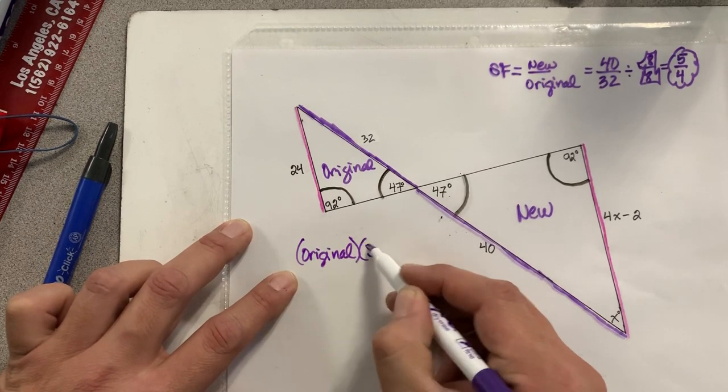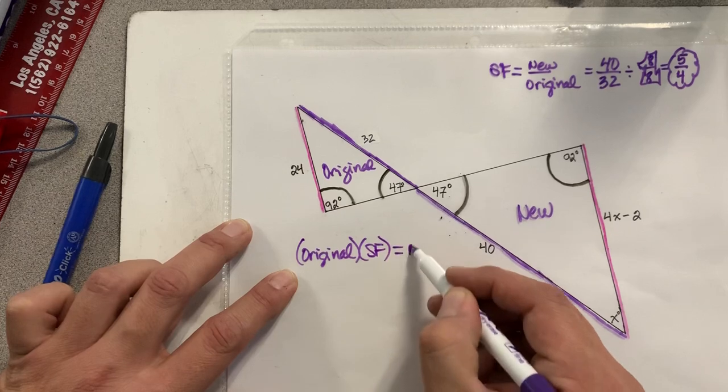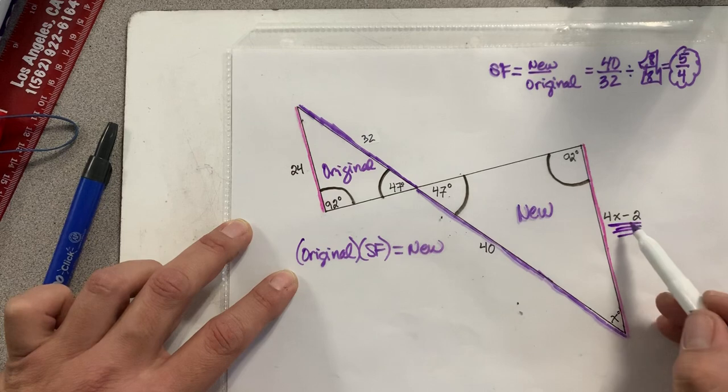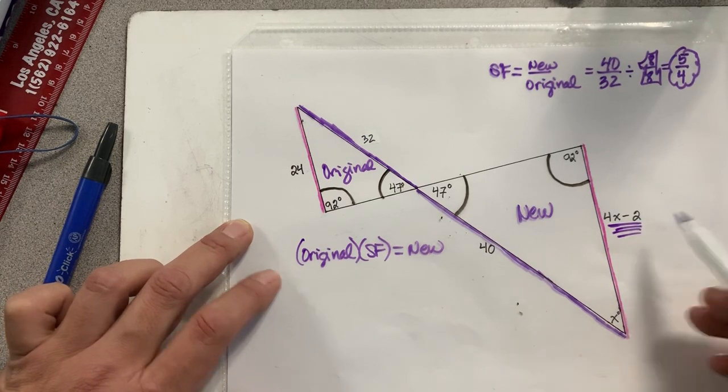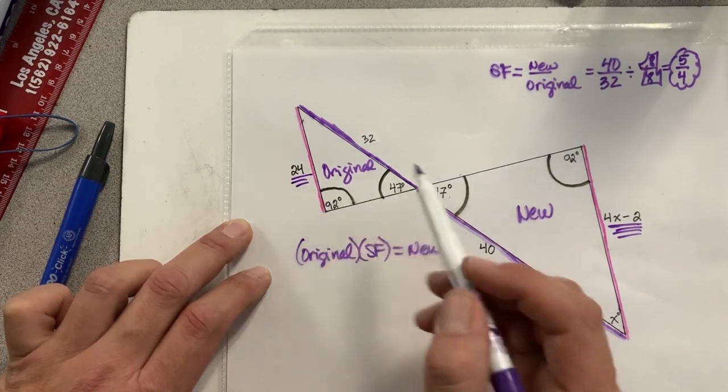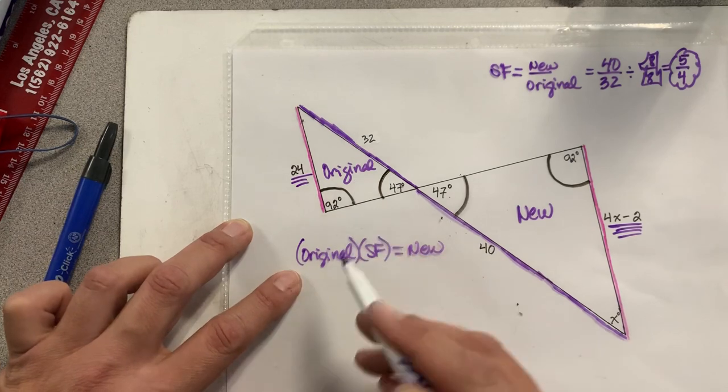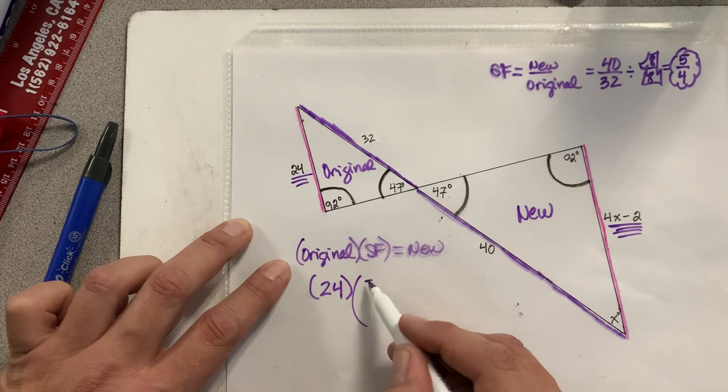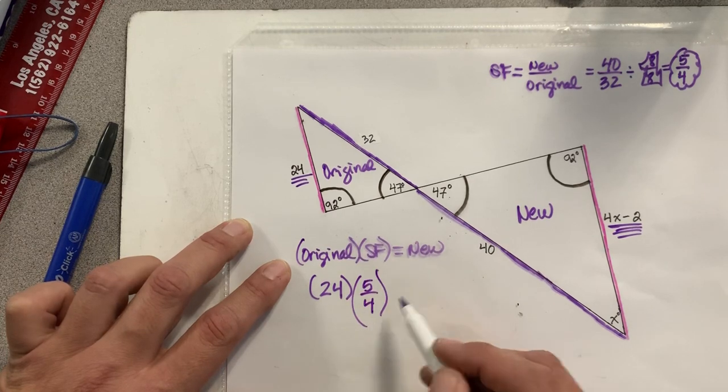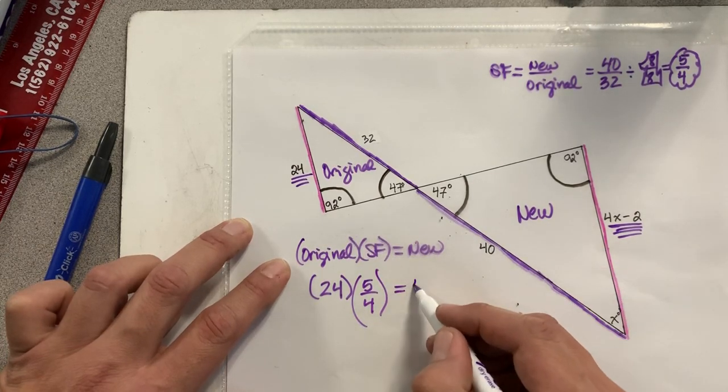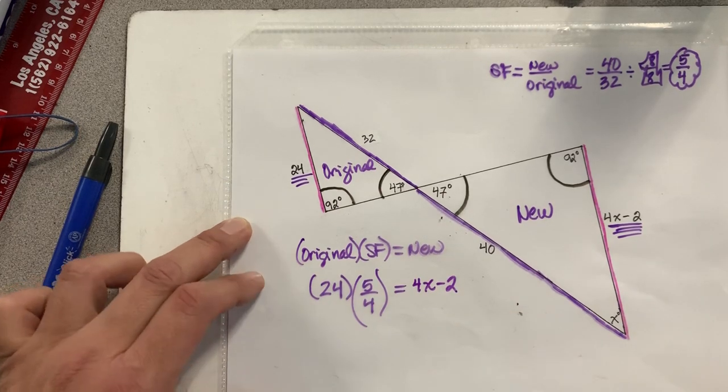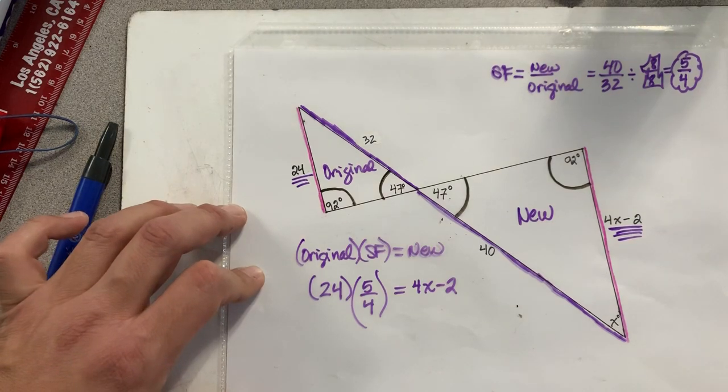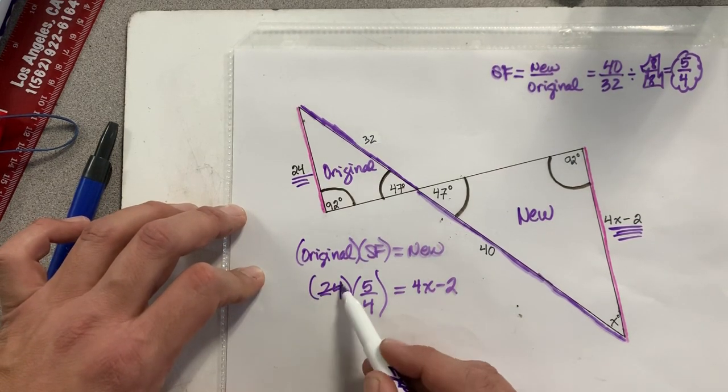I'm working with 4x minus 2 because that's what I'm finding. That means I'm working with 24. 24 is the original, so I'm going to go 24. 24 times the scale factor, which is 5/4ths, equals the new, which is 4x minus 2. I'm going to use cross-canceling. 24 divided by 4?